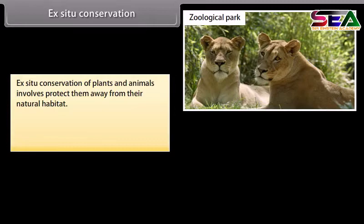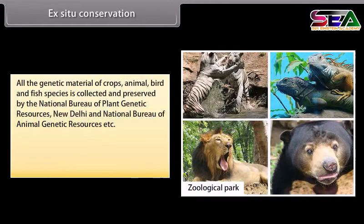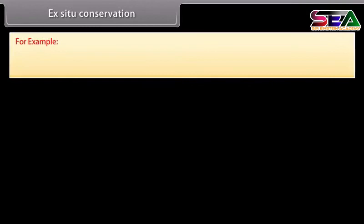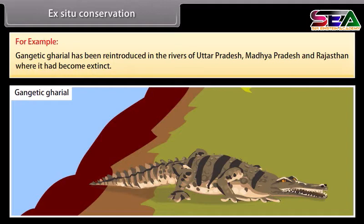Ex-situ conservation of plants and animals involves protecting them away from their natural habitat. Examples include zoological parks and botanical gardens. The genetic material of crop, animal, bird, and fish species is collected and preserved by the National Bureau of Plant Genetic Resources, New Delhi, and the National Bureau of Animal Genetic Resources. Reintroducing species into habitats where they have become extinct is another form of ex-situ conservation — for example, the Gangetic Gharial has been reintroduced in rivers of Uttar Pradesh, Madhya Pradesh, and Rajasthan where it had become extinct.